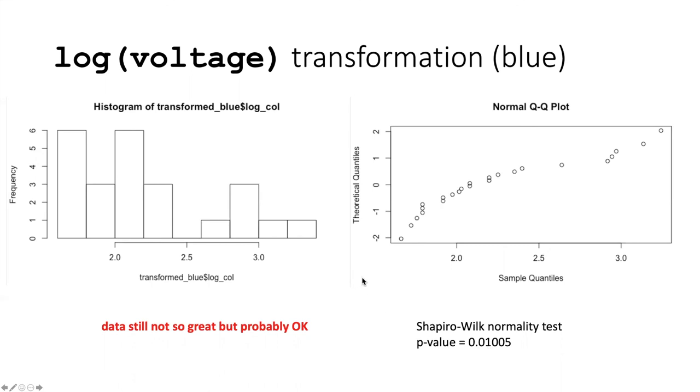So we probably could get away with using these data because of the fact that the t-test is robust to deviations from normality. But this particular situation is a bit questionable.